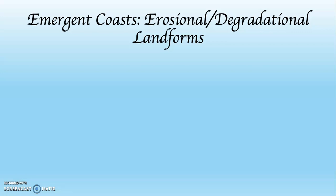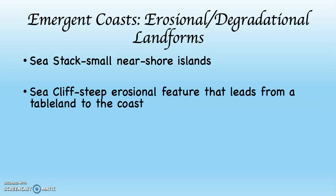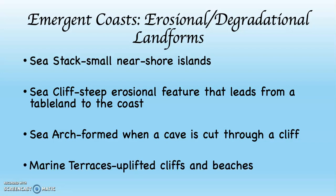These erosional, degradational landforms are very obvious along emergent coastlines. The ones to know are: sea stacks, which are small near-shore islands that indicate where the coastline once was; sea cliffs, which are steep erosional features that lead down from an elevated tableland to the coastline; sea arches, which are formed when a cave is cut all the way through a cliff; and marine terraces, which are uplifted cliffs and beaches — fitting for an emergent coastline because it's tectonically active and being lifted up.